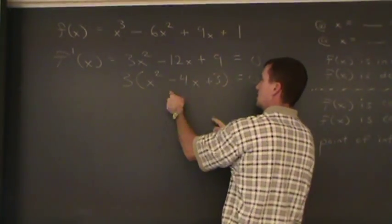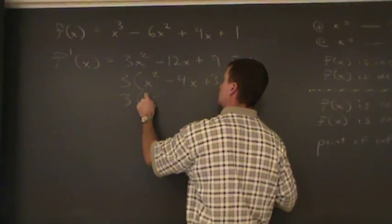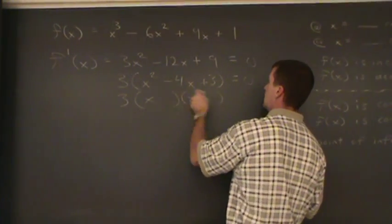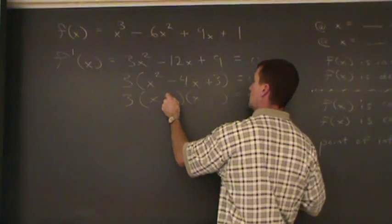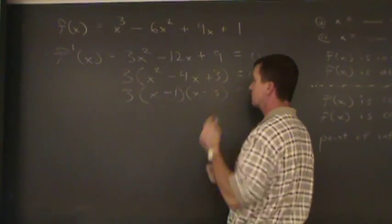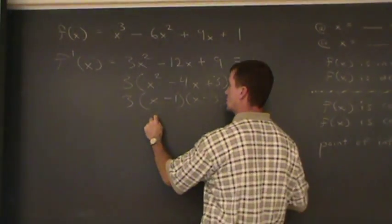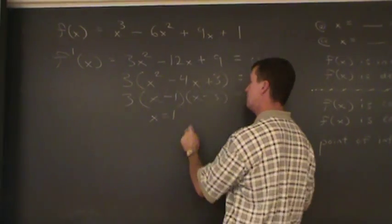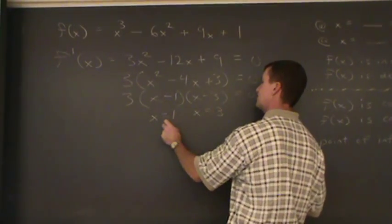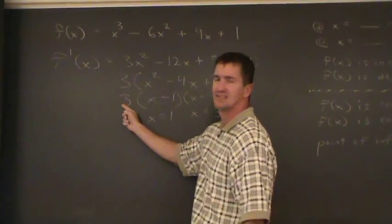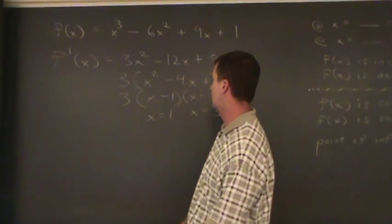Got a trinomial here, I'm gonna factor that. Two numbers I'll multiply to 3 add up to negative 4, that would be a negative 1, negative 3. So my two critical values are x equal to 1 and x equal to 3. These are my critical values. Everyone, that is not a critical value. This does not have a variable there.